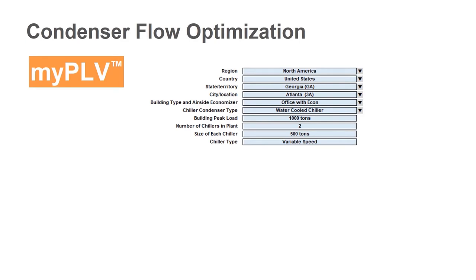The inputs for the condenser flow optimization are really straightforward and should be known early on in the project, which is where this tool is going to be most beneficial. So the first thing is you're going to enter in the city that the project is located in. This is going to bring in an ASHRAE 169 weather file for an entire year, 8760.